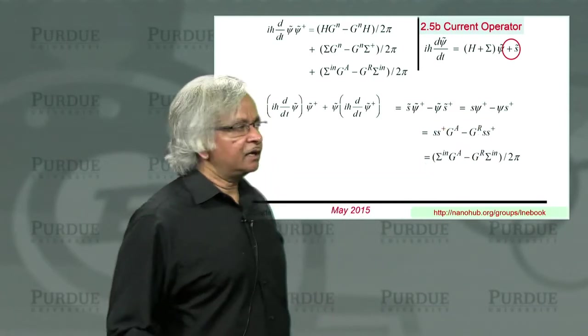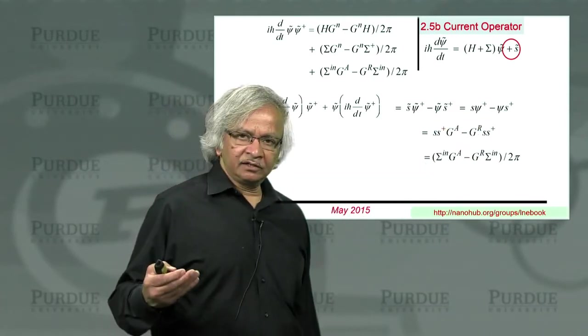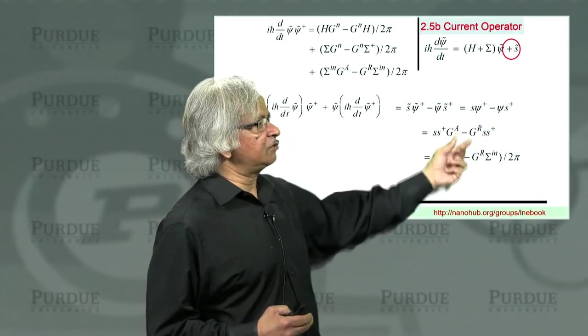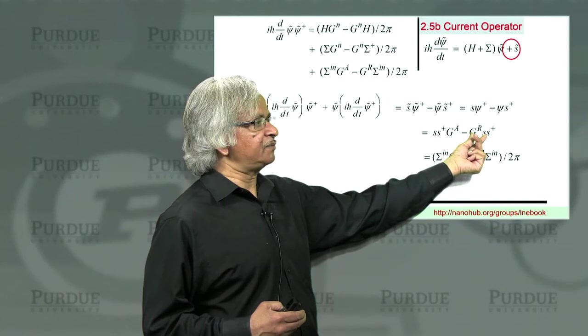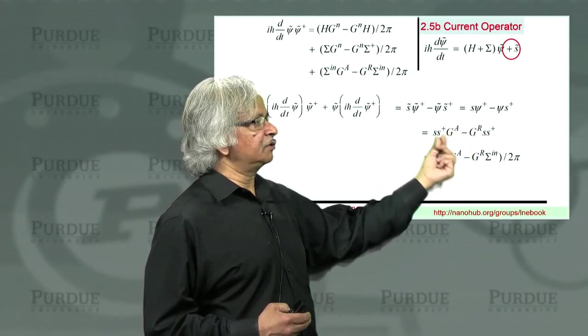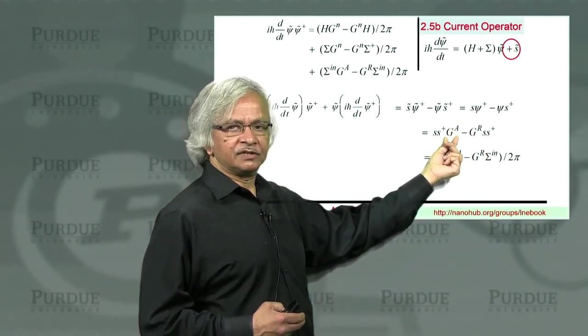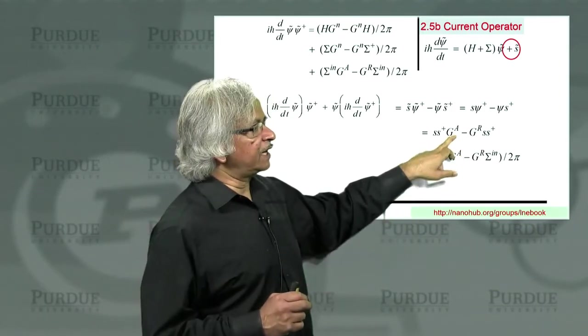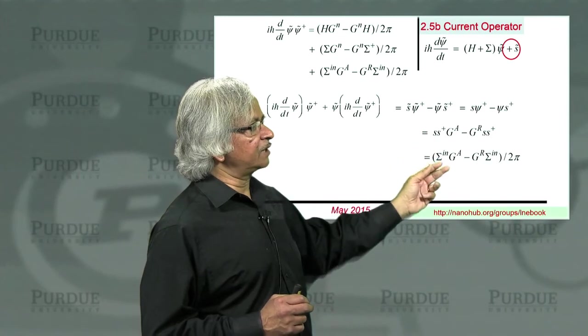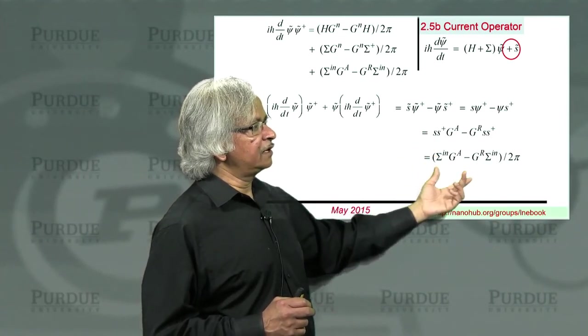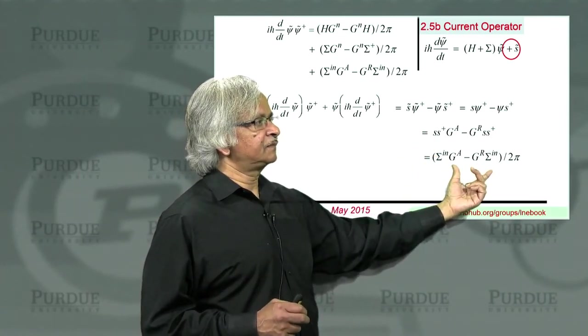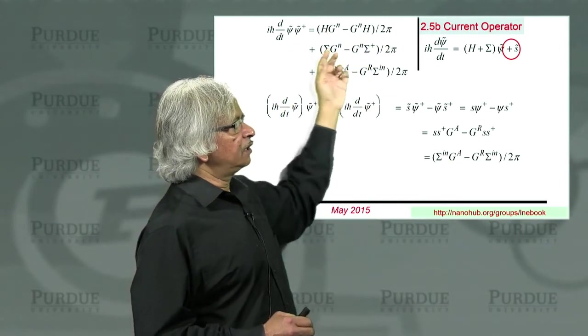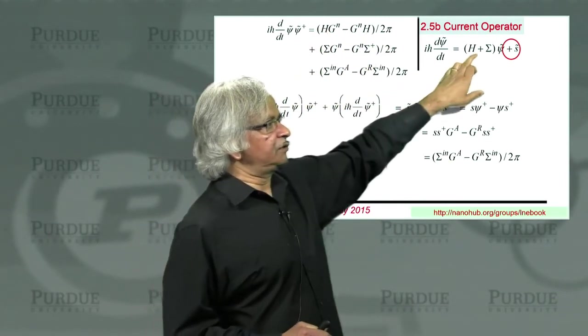Now you use the expression that we have been using from the time independent Schrodinger equation that psi is equal to retarded Green's function times S. And psi dagger is equal to S dagger times the advanced Green's function. This is exactly what we had done before. Put that in. And then S S dagger becomes sigma_in over 2pi, giving you this expression. So this you can now put back in here. So now you have all three terms corresponding to the three of them.